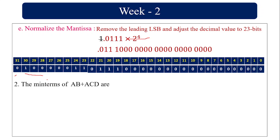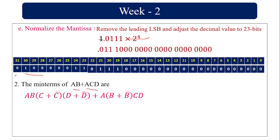The min terms of expression AB plus ACD: to find min terms, each term in the equation must have all the variables present. Here we have 4 different variables — A, B, C, and D — and 2 terms. Both terms should have all 4 variables. In the first term, 2 variables are missing; in the second term, 1 variable is missing.